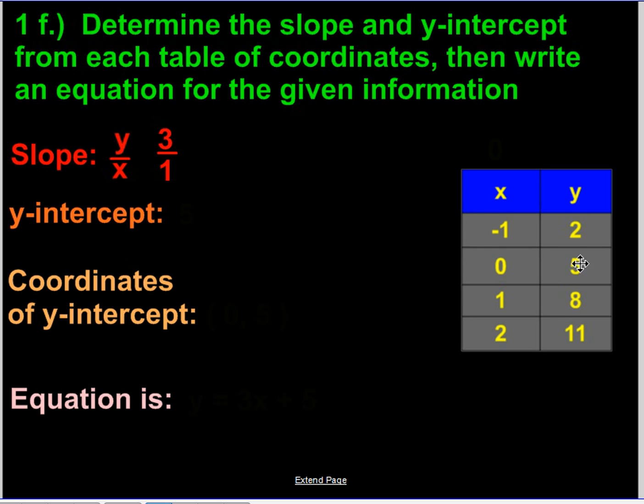Our y-intercept. Now for this problem, we actually have 0 as one of our coordinates for x. So that works out nicely for us. We don't need to figure out what it would be. We have it right here. If x is at 0, y is at 5.